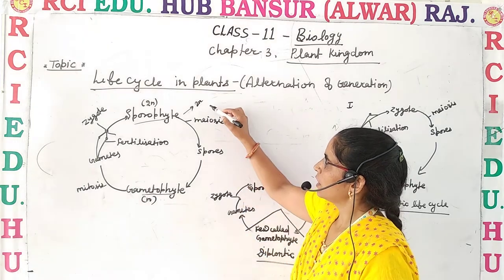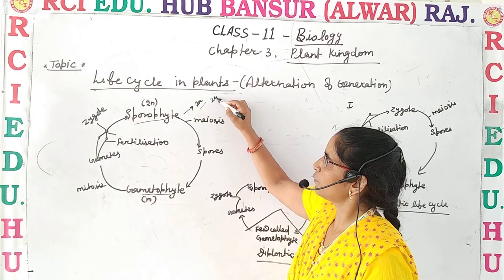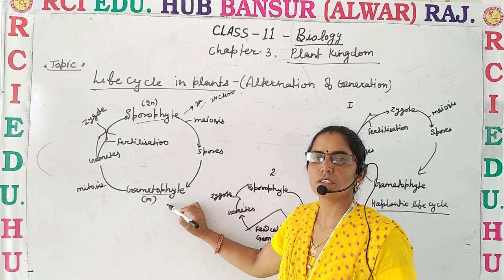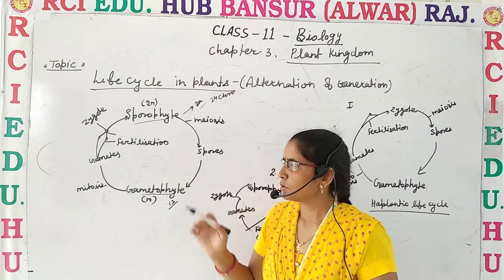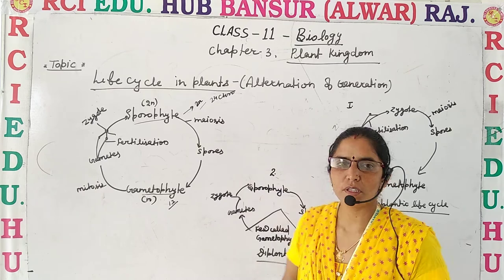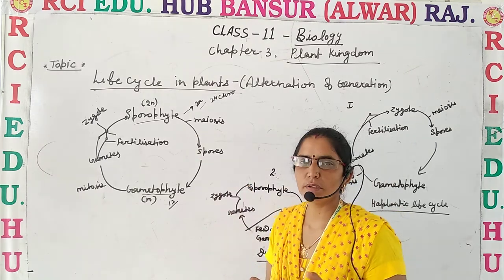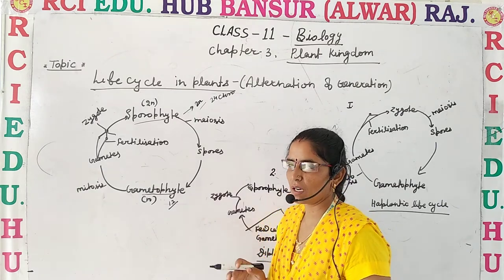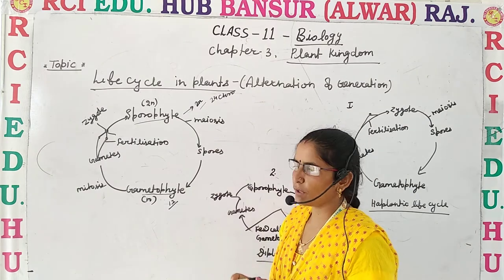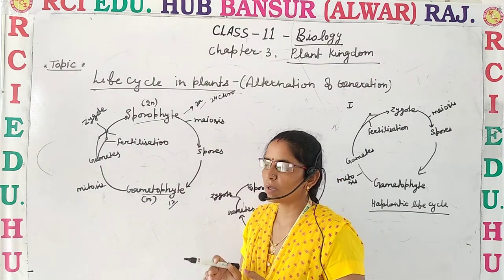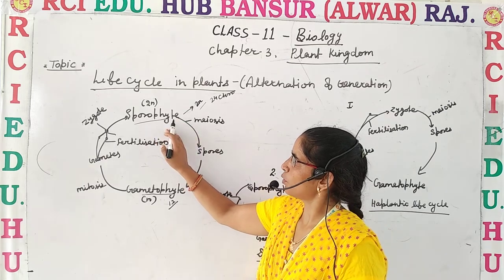For example, if the sporophyte or sporophytic stage has 24 chromosomes, then the gametophytic stage has only 12 chromosomes. Now, before we discuss the three types of alternation of generation, let's note the common features which take place in plants. First, mainly the plant body is sporophytic — not in all stages, but especially in angiosperms, gymnosperms and others.